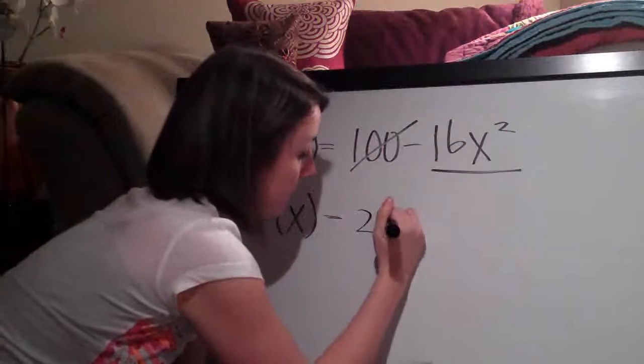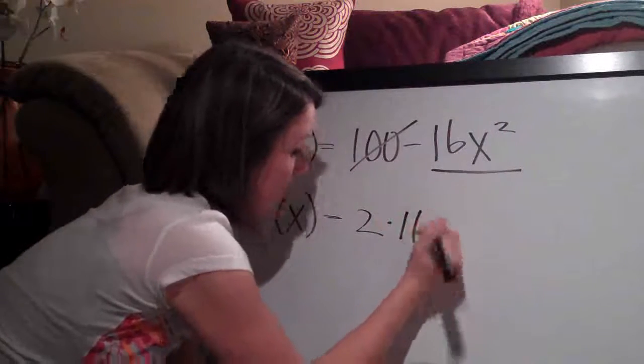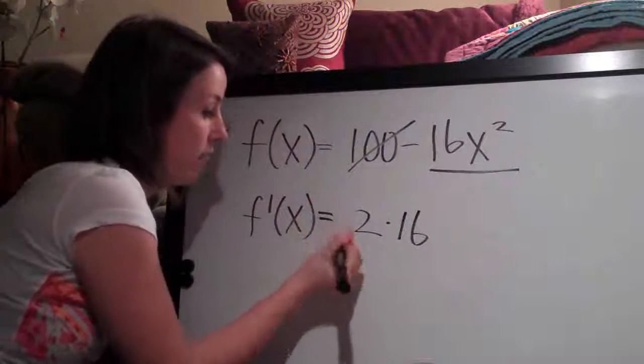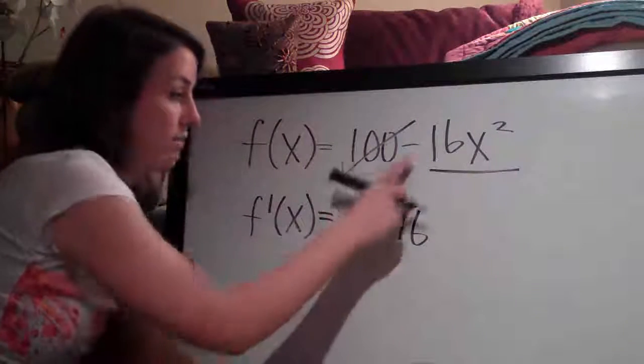So it's going to be 2 times 16, oh and see, I already made the mistake. I forgot the negative sign so we have to put the negative sign in front of it here.